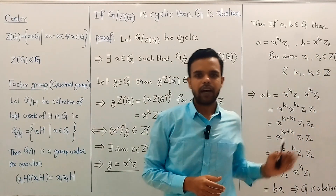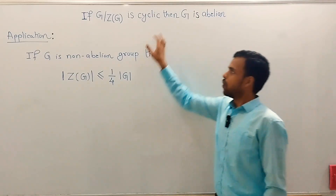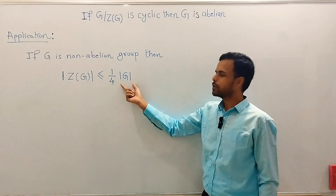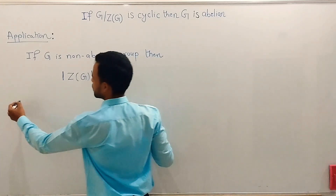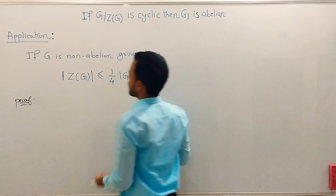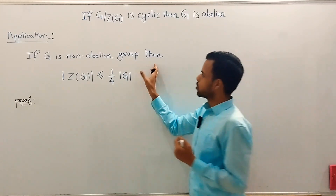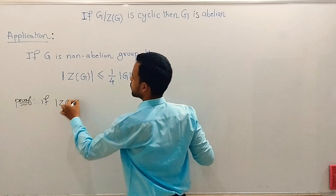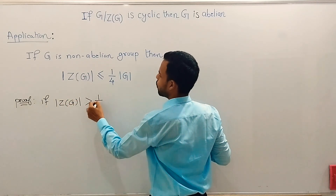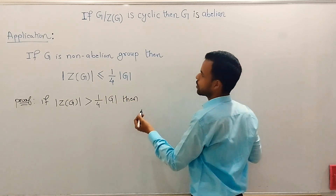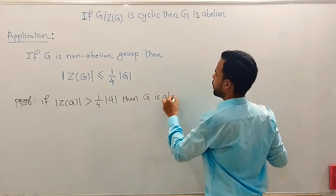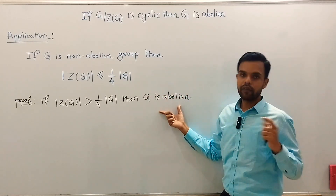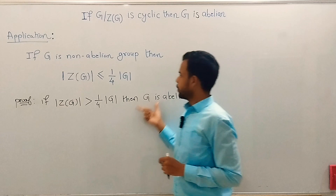Now let us see an application of this beautiful result. A nice application is: if G is a non-abelian group then the order of the center Z(G) is less than or equal to one-fourth times the order of G. To see this, we will prove its contrapositive statement. The contrapositive states: if the order of Z(G) is greater than one-fourth times the order of G, then G is abelian. If we prove this contrapositive statement then the original result is proved. Both statements are very useful in solving problems, so remember them.